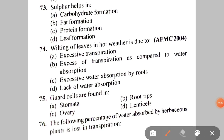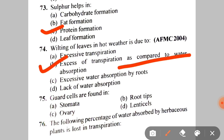Next: sulfur helps in A. Carbohydrate formation, B. Fat formation, C. Protein formation, D. Leaf formation. The correct answer is C — protein formation. Next: wilting of leaves in hot weather is due to — A. Excessive transpiration, B. Excess of transpiration compared to water absorption, C. Excessive water absorption by roots, D. Lack of water absorption. The correct answer is B — because roots cannot absorb water fast enough compared to the rate of transpiration.